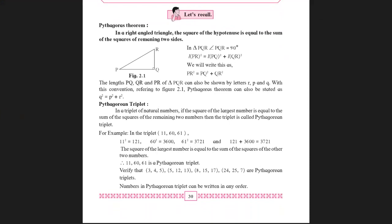The next topic is Pythagorean triplet. What it means is, in a triplet of natural numbers, if the square of the largest number is equal to the sum of the squares of the remaining two numbers, then the triplet is called a Pythagorean triplet. For example, take three numbers 11, 60, 61. We find the squares of all three numbers.